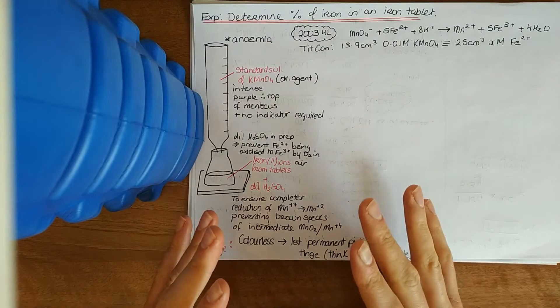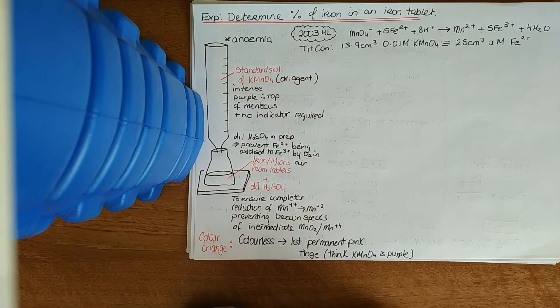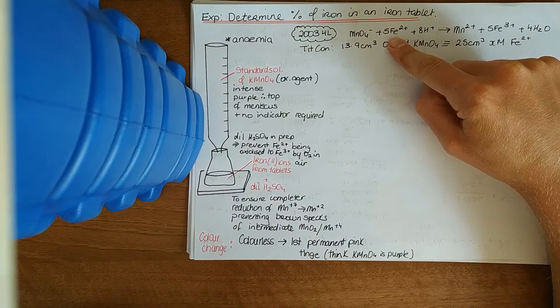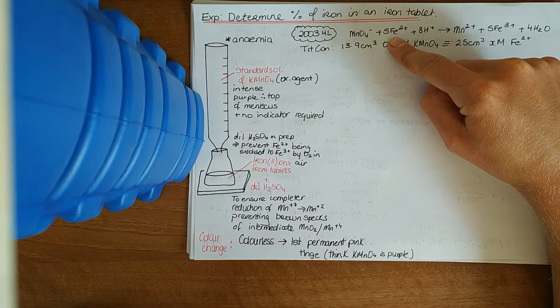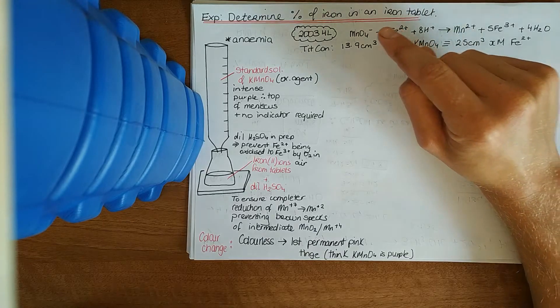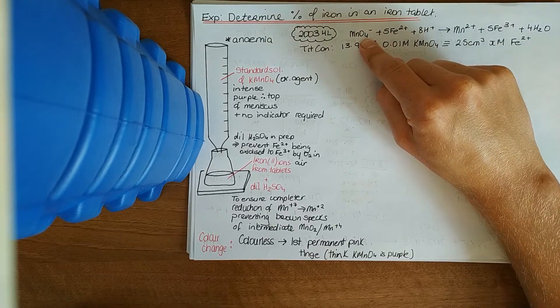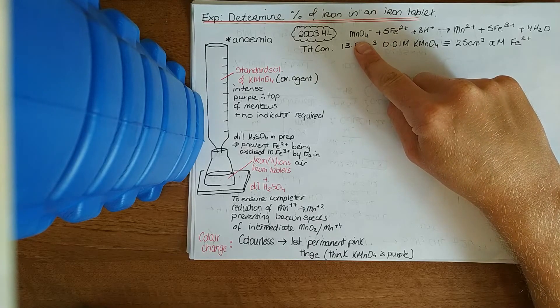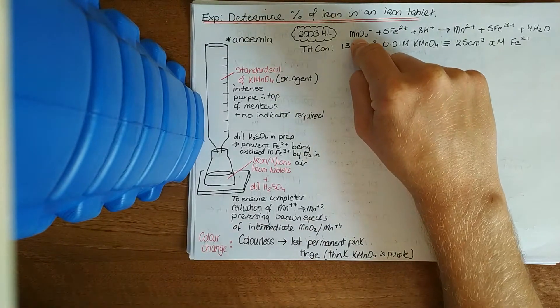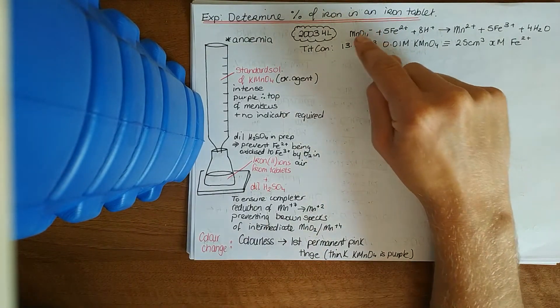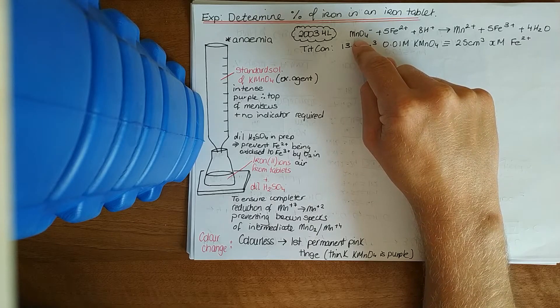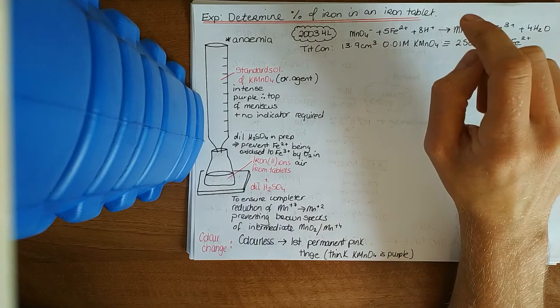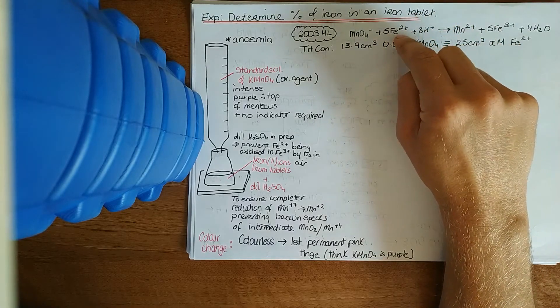In the first of these two types of titration, you would have used a standard solution of ammonium iron 2 sulfate to work out the concentration of the oxidizing agent, potassium permanganate or potassium manganate 7. In the subsequent experiment, you'd use this standard solution of KMnO4, the solution whose concentration is accurately known, to work out the concentration of iron in a series of iron tablets.